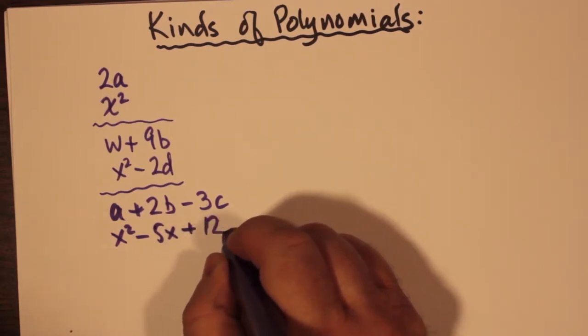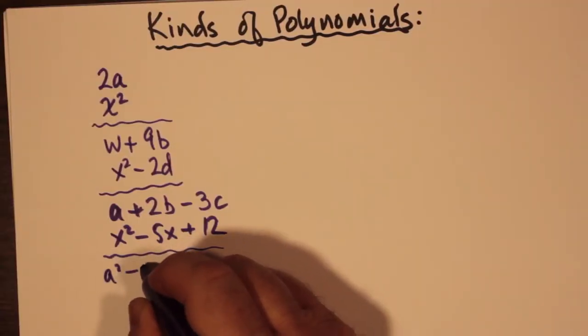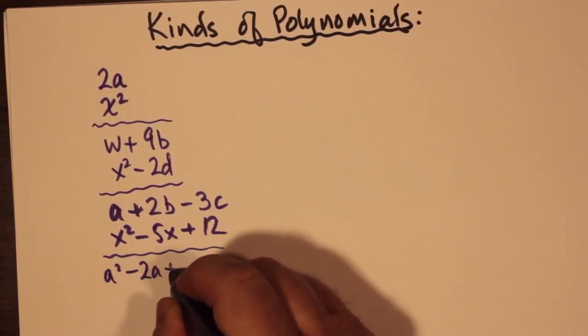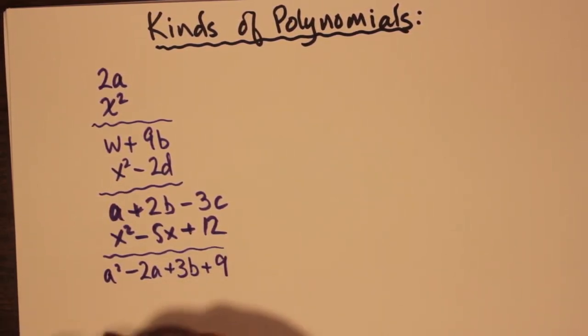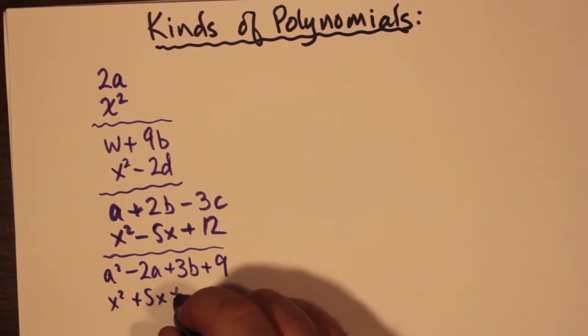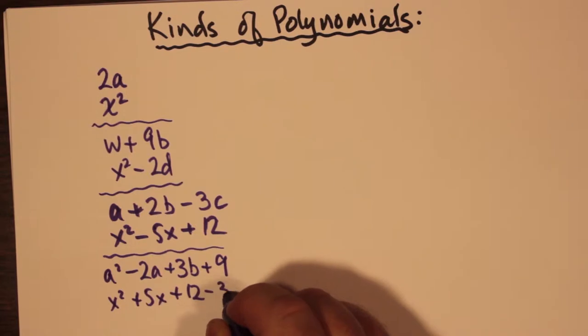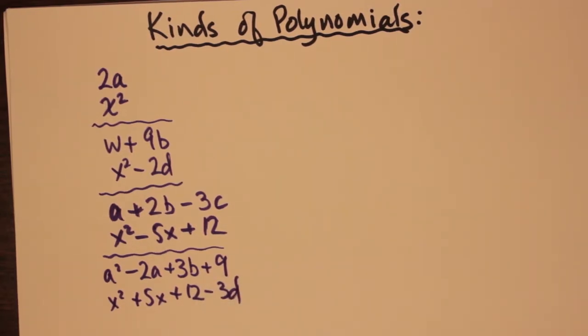When we go to four or more terms, then we have polynomials. Polynomials have more than three terms, or if you like, four or more terms. Examples I have here are a² - 2a + 3b + 9, so they can have multiple variables, or maybe all the same variable and maybe one constant term.